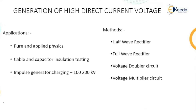Let us start with the first classification, that is high DC voltage generation. This direct current voltage generation can be used for different applications, such as in pure and applied physics where high DC voltage is needed, for testing insulation of cables and capacitors, and even for charging of impulse generators where the voltage ranges from 100 kilovolt to 200 kilovolt.